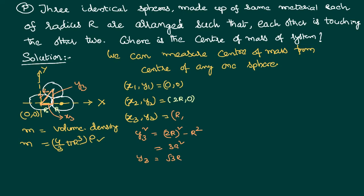Therefore y3 = √3 · r. So the coordinates of the third particle are (r, √3r). To verify: x3 equals the radius of the sphere from the coordinate system, and y3 is found from the right-angle triangle where the hypotenuse is 2r (the distance between centres) and the base is r, giving y3 = √3r. With all coordinates known, finding the centre of mass is straightforward — just substitute into the formula.